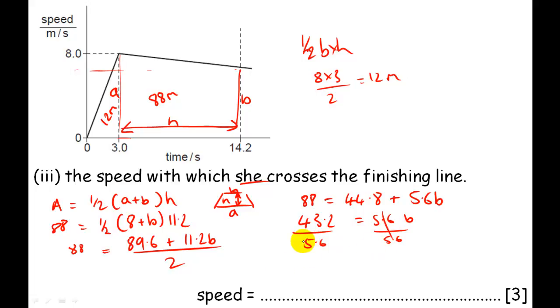Cancel five point six. So now, forty-three point two divided by four point six should tell me what b is. And b is going to be this height, which will be in meters per second. And so what's forty-three point two divided by six? It is seven point seven. So b is equal to seven point seven, and it will be meters per second.